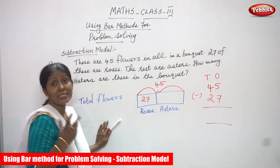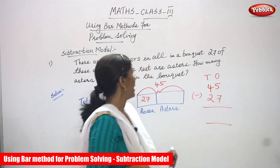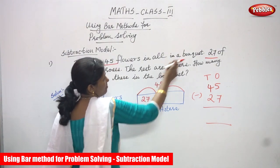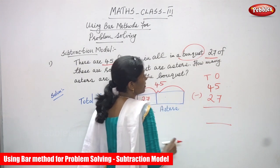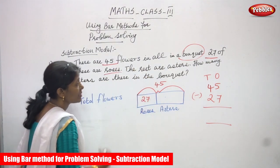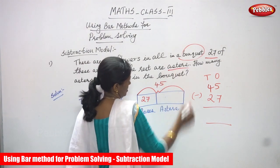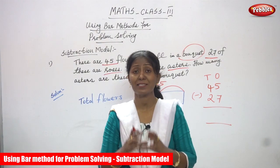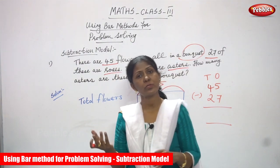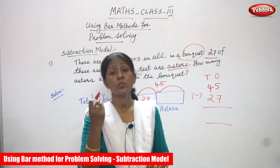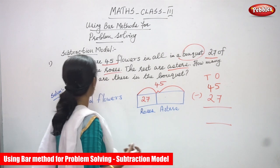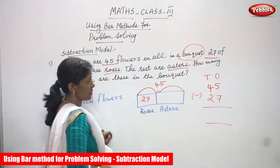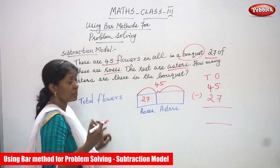So the total number of flowers in the bouquet is 45, and the number of roses is 27. The remaining flowers are called asters — because roses and asters combined together make up the bouquet. So you have to find out the number of asters. That is the question they asked you.